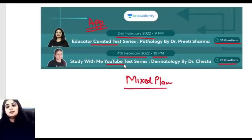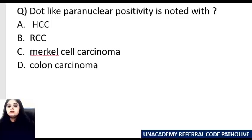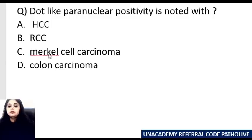Let's begin now with the mixed bag of questions. The first question has gained a lot of importance in the past one year because this particular topic is being asked more. A dot-like paranuclear positivity is noted with which of the following tumors? Hepatocellular carcinoma, renal cell carcinoma, Merkel cell, or colon cancer? The answer is Merkel cell carcinoma.